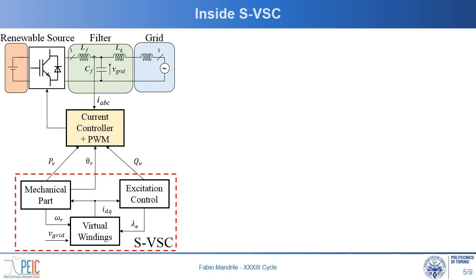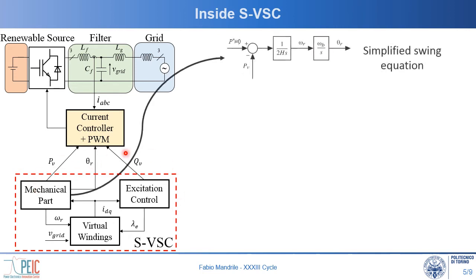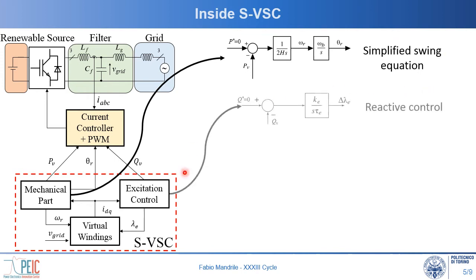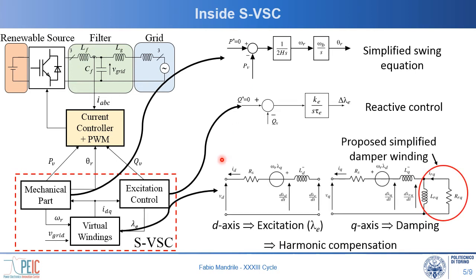Let's have a look inside the SVSC. We have a current control converter interfaced to the grid. Its references come from the SVSC model, which is divided into several blocks. First, the mechanical part, which implements a simplified swing equation. Then, the excitation control, which is in charge of the reactive power channel. Finally, the virtual windings, implemented on the DQ axis, which interface the excitation control and provide electromechanical damping. These windings operate as a virtual impedance, therefore generating the harmonic compensation references.